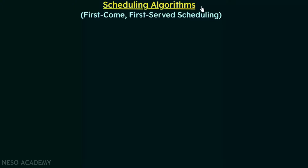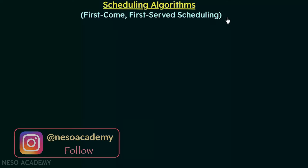From this lecture onwards, we are going to start studying about the different scheduling algorithms. In this lecture, we are going to discuss the first scheduling algorithm, which is first come first served scheduling. We will see what this first come first served scheduling is, how it works, and whether it is a good scheduling algorithm.